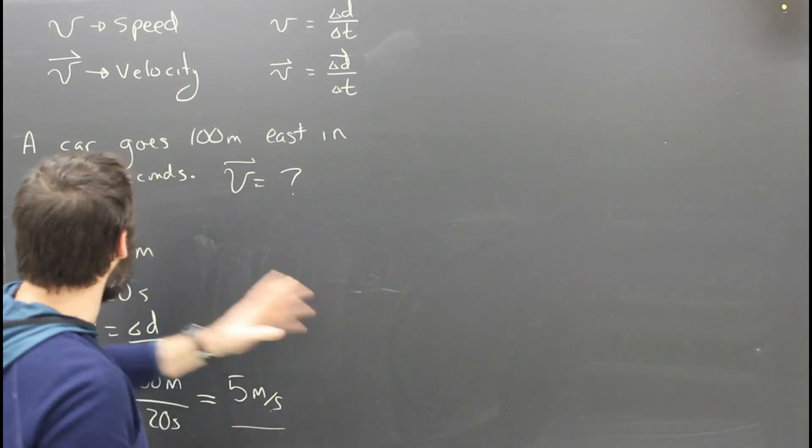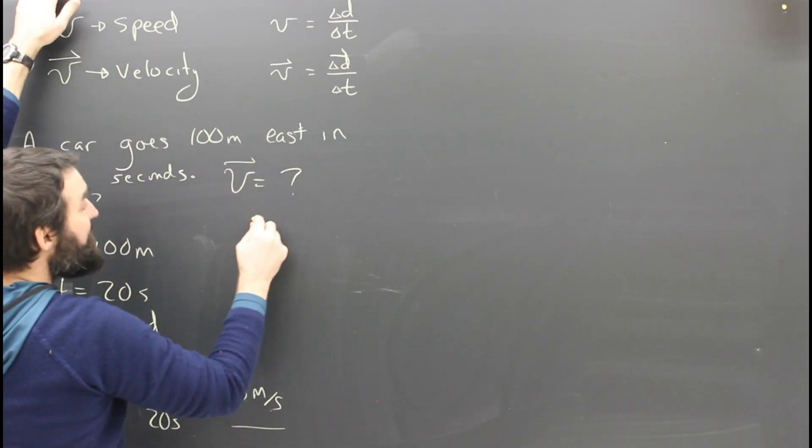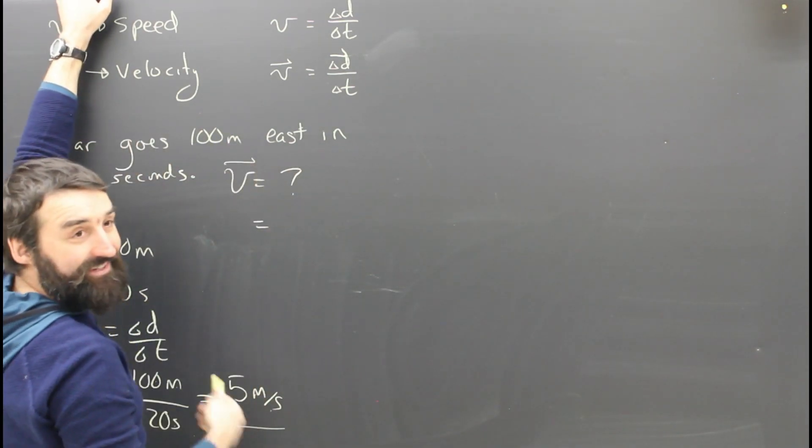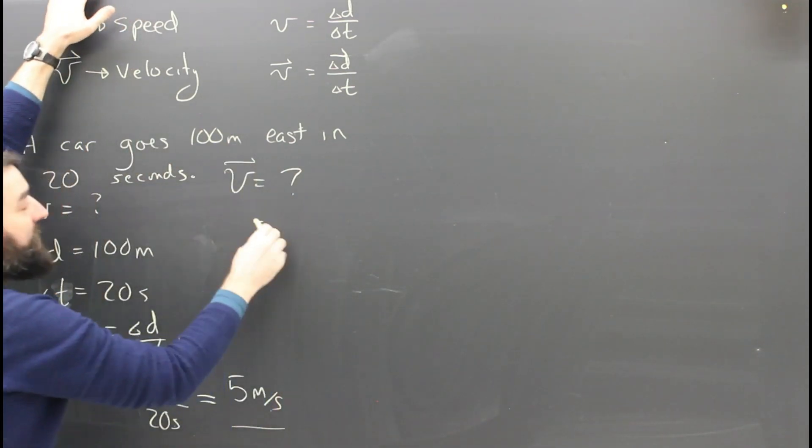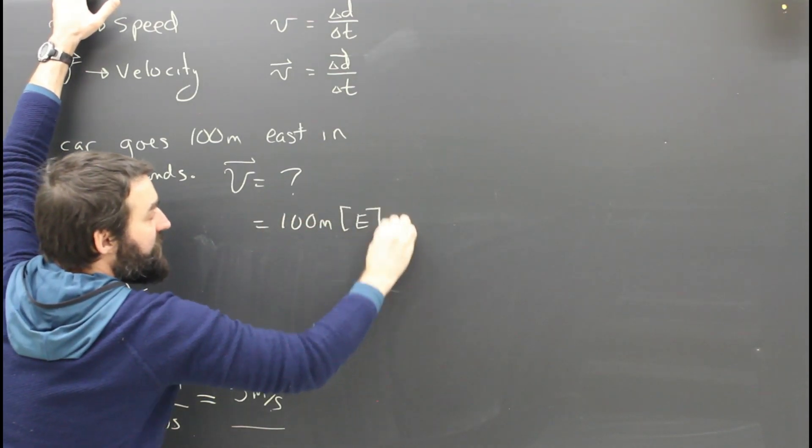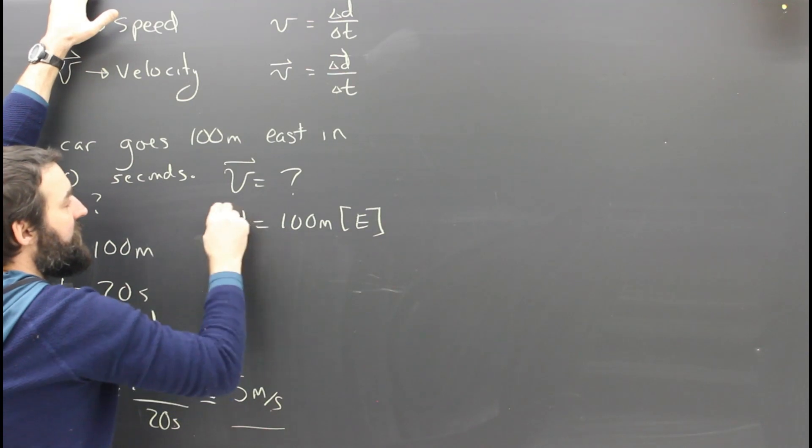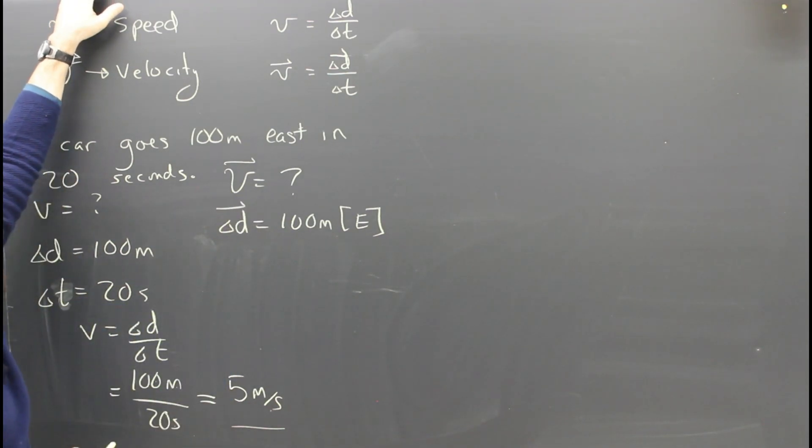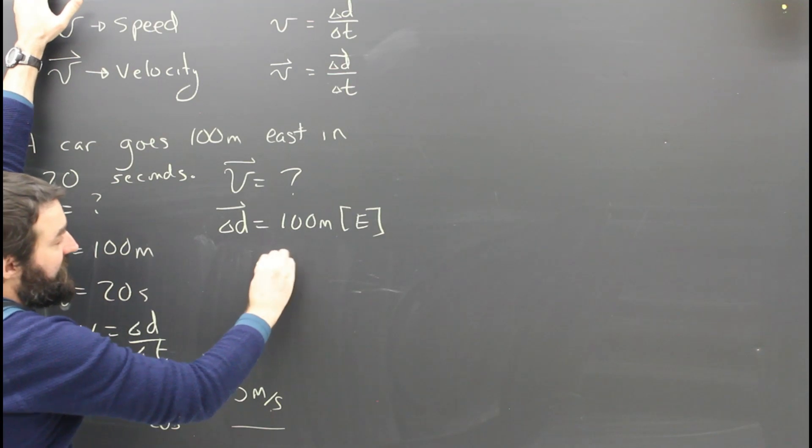What about the velocity? Same thing. The displacement, because to calculate velocity, we need the displacement. The displacement was not 100 meters, it was 100 meters east. We can edit that out, right? 100 meters east.